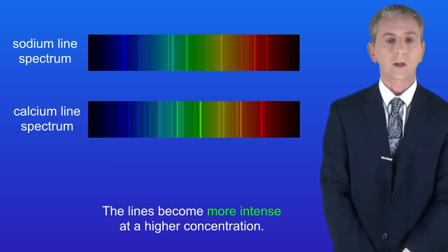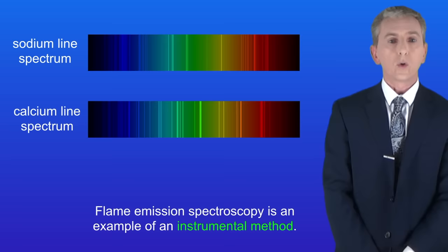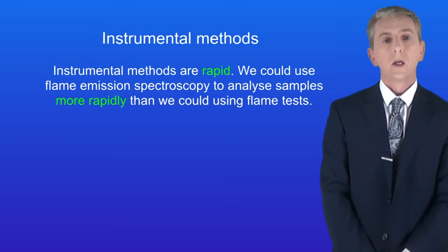Now flame emission spectroscopy is an example of an instrumental method. In other words it's carried out by a machine. There are three main advantages to instrumental methods and you need to learn them.